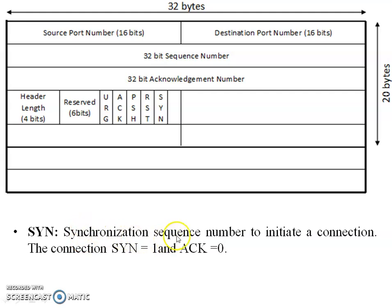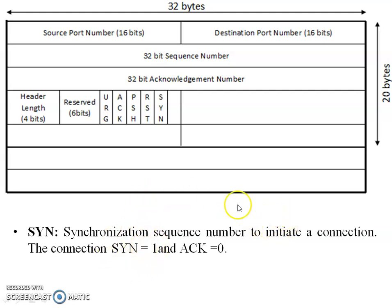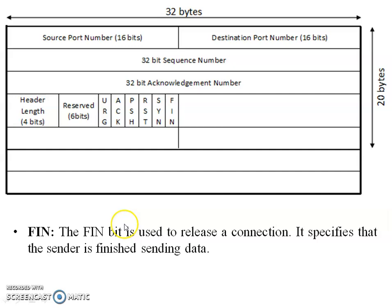The SYN flag is used to synchronize sequence numbers to initiate a connection. When the connection is synchronizing, SYN equals one and ACK equals zero. When the sender sends data, SYN flag equals one. When the receiver acknowledges the data to the sender, ACK equals one and SYN equals zero.